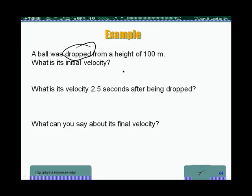If it is dropped, that means that the initial velocity, Vi, it's going to be zero meters per second. Now here, I'm going to adopt the positive direction as the upward direction.